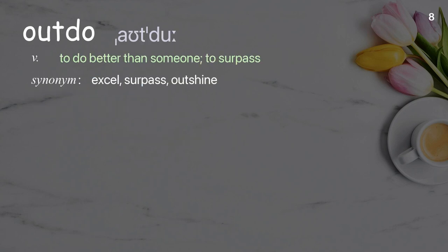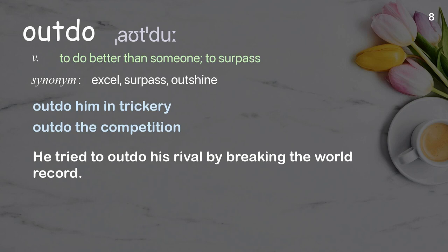Outdo: to do better than someone, to surpass. Examples: outdo him in trickery, outdo the competition. He tried to outdo his rival by breaking the world record.